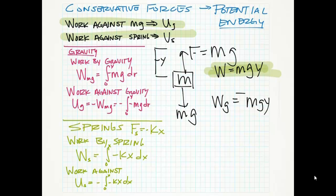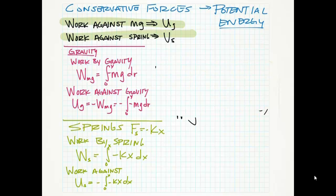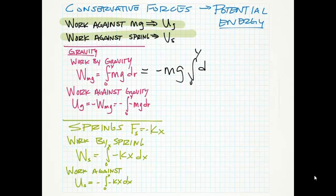Looking at it from the calculus — and the reason we're going through practice with this calculus is because we're going to have to do it for real when we talk about the spring. If we look at the work done by gravity from a calculus perspective, it's going to be negative m, g, on the integral of 0 to y, dr. So we get negative m, g, times r, on the integral of 0 to y. For the work done by gravity, we get exactly what we saw: negative m, g, y.